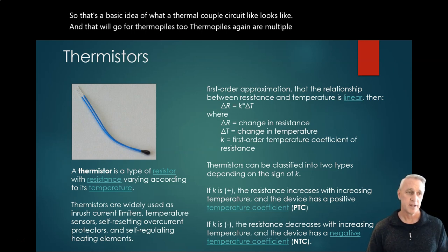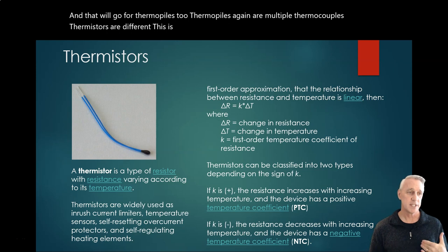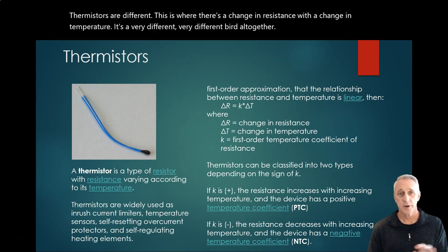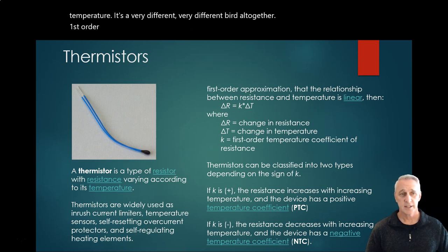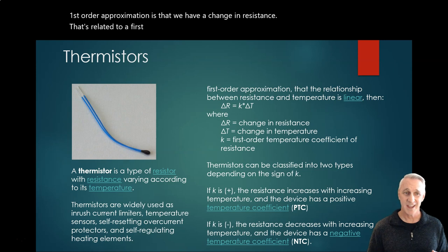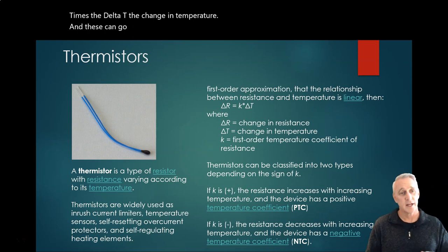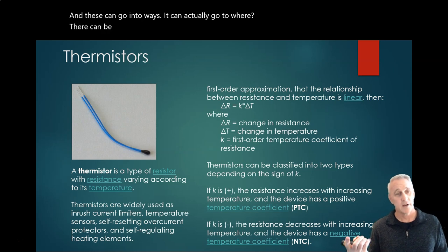Thermistors are different. This is where there's a change in resistance with a change in temperature. First order approximation is that we have a change in resistance that's related to a first order temperature coefficient of resistance K times the delta T, the change in temperature. These can go in two ways - there can be an increase of resistance with an increase of temperature.